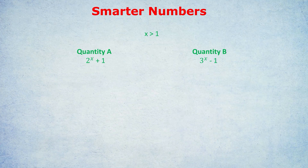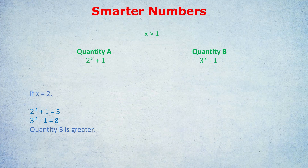Let me show you briefly what would happen if we started at 2. If x is 2, quantity A would be 2 to the 2+1, which is 5, and quantity B would be 3 to the 2−1, which is 8 — so quantity B is bigger. If we try a bigger number like 5, quantity A becomes 33, quantity B becomes 243, so quantity B is way bigger. People will be very confident quantity B is bigger — but that's actually the wrong answer. Even the smartest students might try 1.5, but working out a power of 1.5 is really hard, and even 1.5 still gives quantity B as bigger.